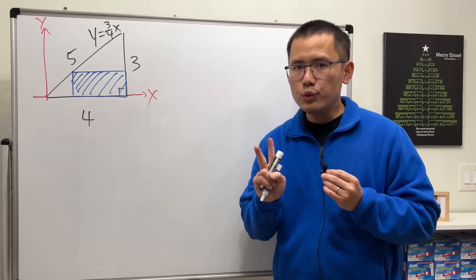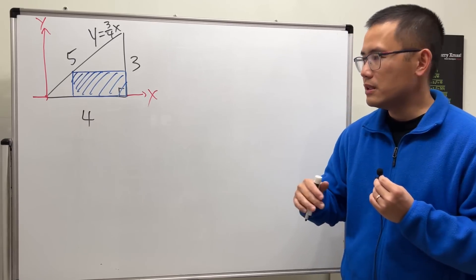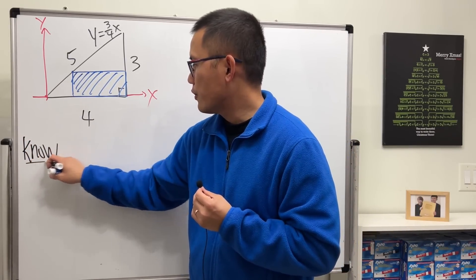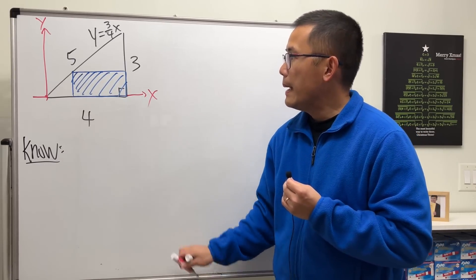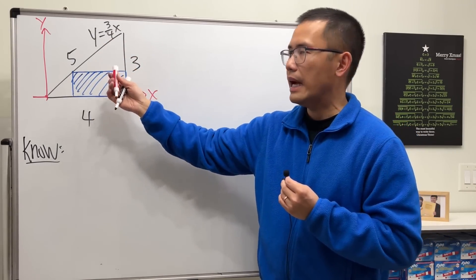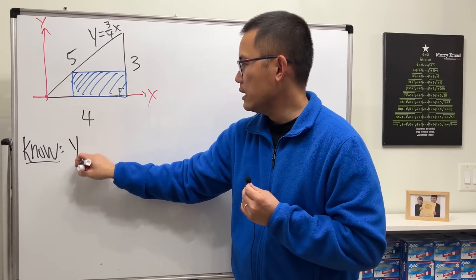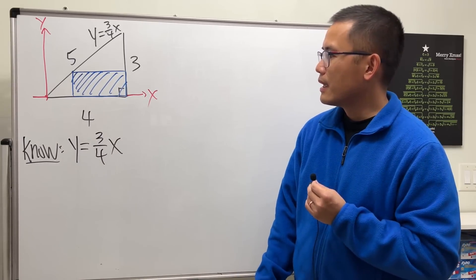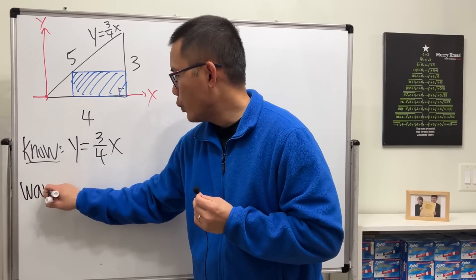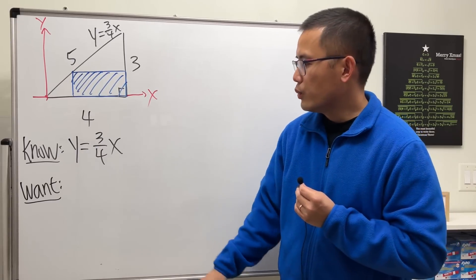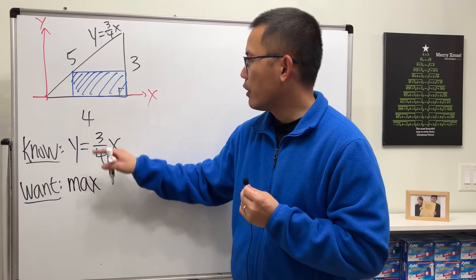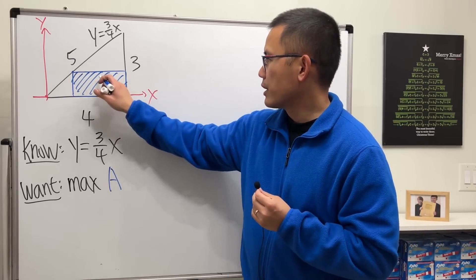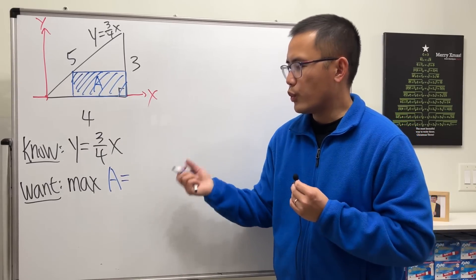Here are two really useful words that will help you solve application problems. The first word is 'know' — we put down what we know. From our picture we know the connection between x and y is y = (3/4)x. Next, we put down what we want to know. The question is: we want the maximum of the area of that blue rectangle.